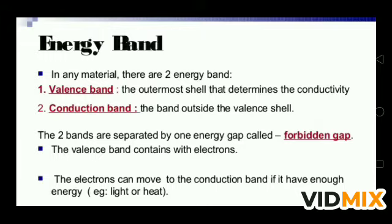The two bands are separated by one energy gap which is called the forbidden gap, or forbidden energy gap. It is denoted by E_g — G for gap and E for energy. The energy gap between the conduction band and valence band is known as the forbidden energy gap, and no free electrons are present in the forbidden energy gap.